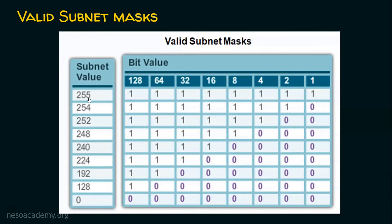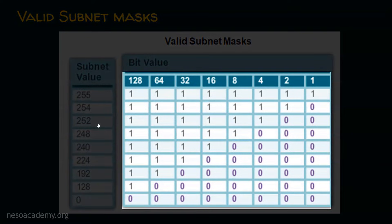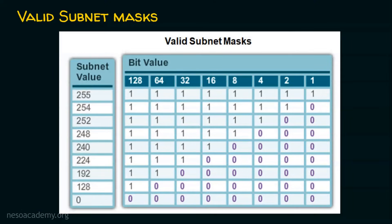An octet in a subnet mask can take only these values: 255, 254, 252, 248, 240, 224, 192, 128, or 0. In a subnet mask, there will always be consecutive ones followed by consecutive zeros — there will never be a mixture. For example, the class B subnet mask 255.255.0.0 is 16 consecutive ones followed by 16 consecutive zeros in binary.